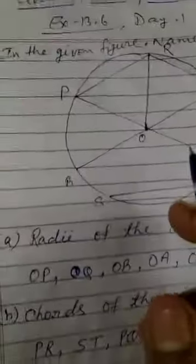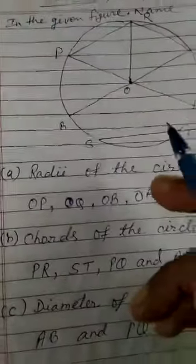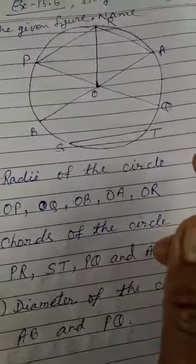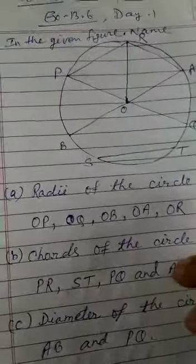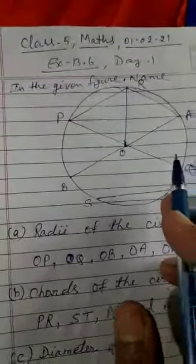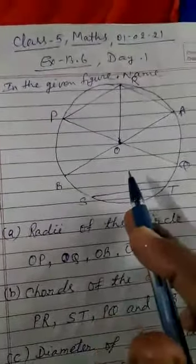Now the next question: diameter of the circle. So what is diameter? The line segment having its endpoints on the circle and passing through the center. Here you see two line segments.